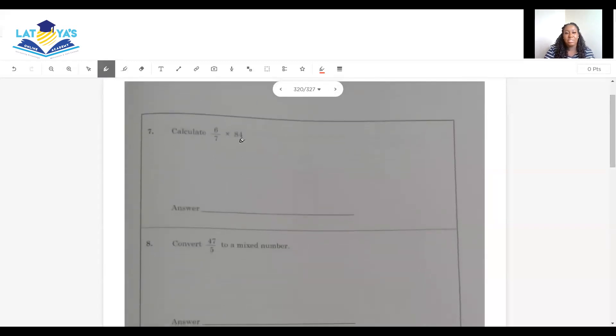Calculate 6/7 multiply by 84. 84 over 1 is understood as its denominator. 7 into 7 is 1. And 7 can go into 84 twelve times. 6 times 12 is 72, and that's our answer.